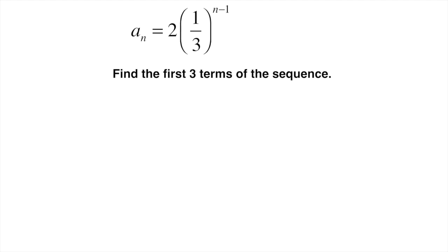This is a geometric sequence and we're asked to find the first three terms of the sequence. A geometric sequence is set up so that it makes it very easy to identify at least the first term and the ratio.